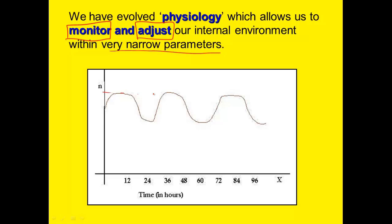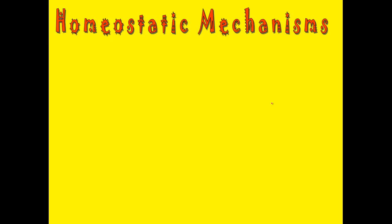What we've done is evolve physiology that allows us to both monitor and adjust our internal environments, and that has to happen within very narrow parameters. It can't go too high and it can't go too low. If you ever see a graph that looks like this, that is a homeostatic graph — it goes up a little bit, down a little bit, correcting itself up and down, but never going beyond those parameters.